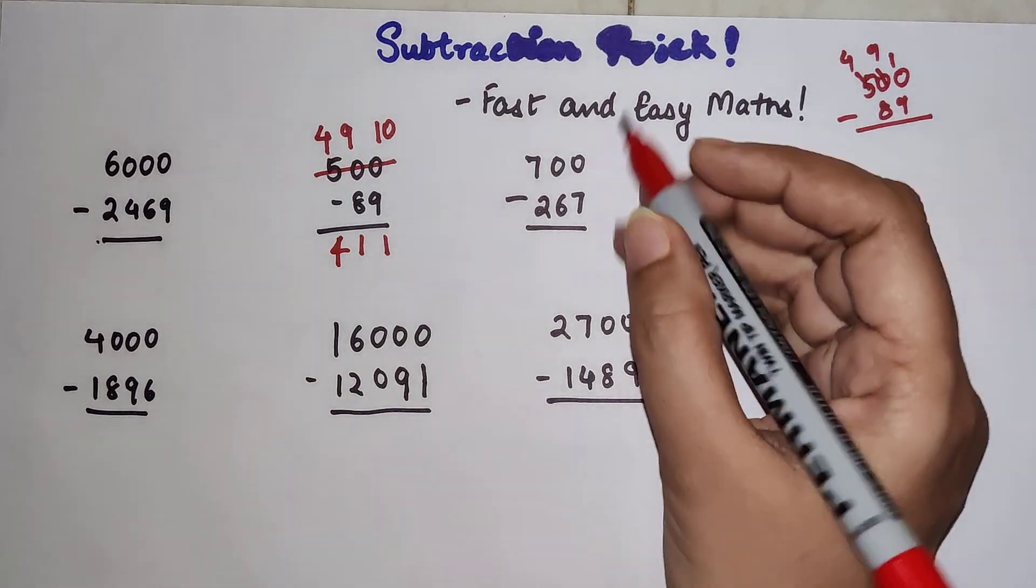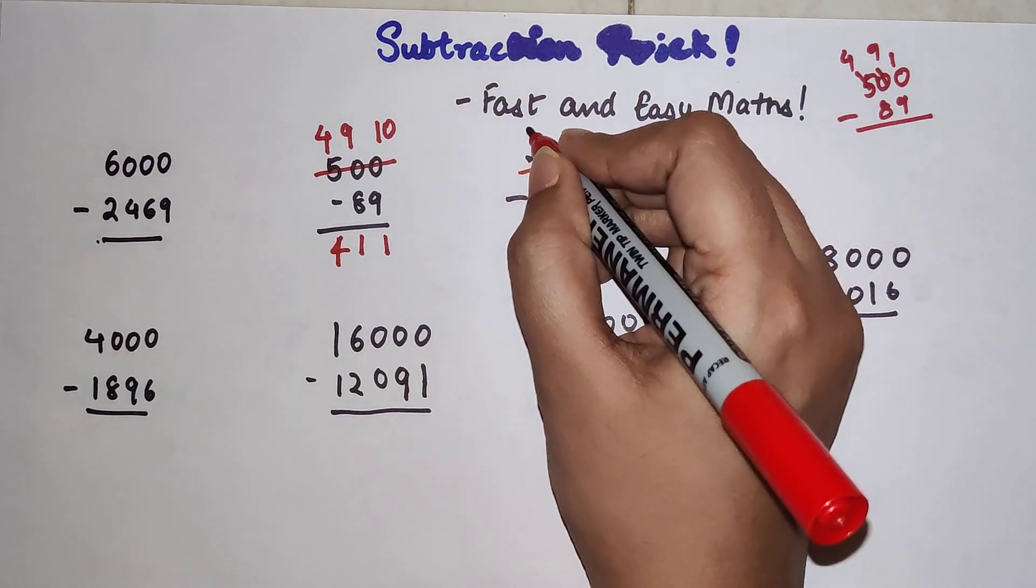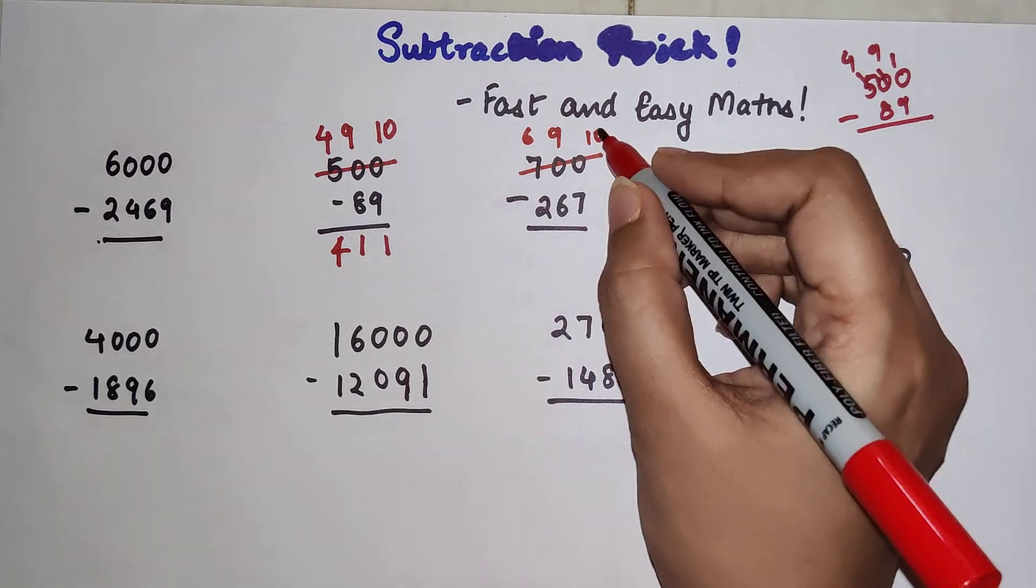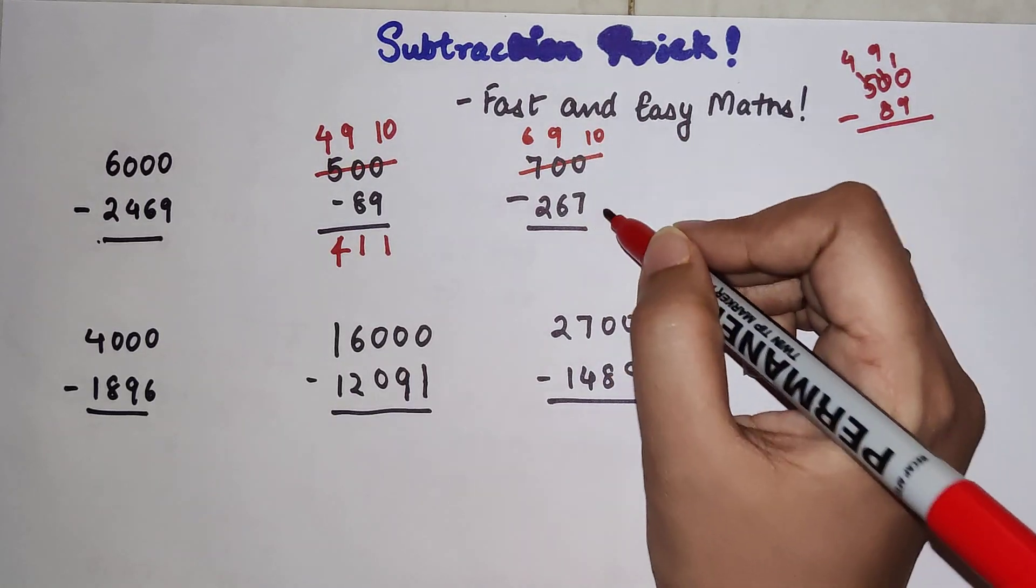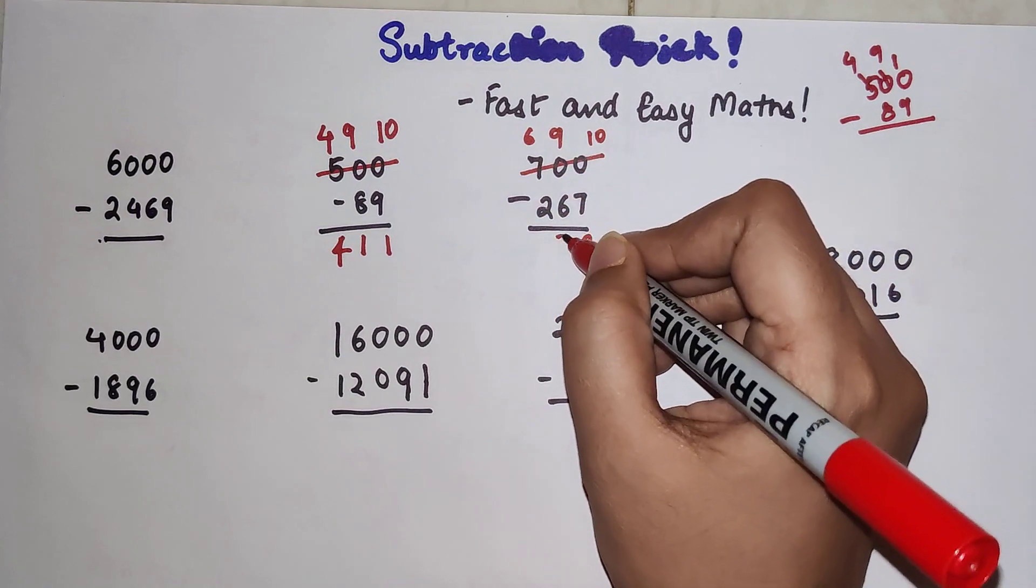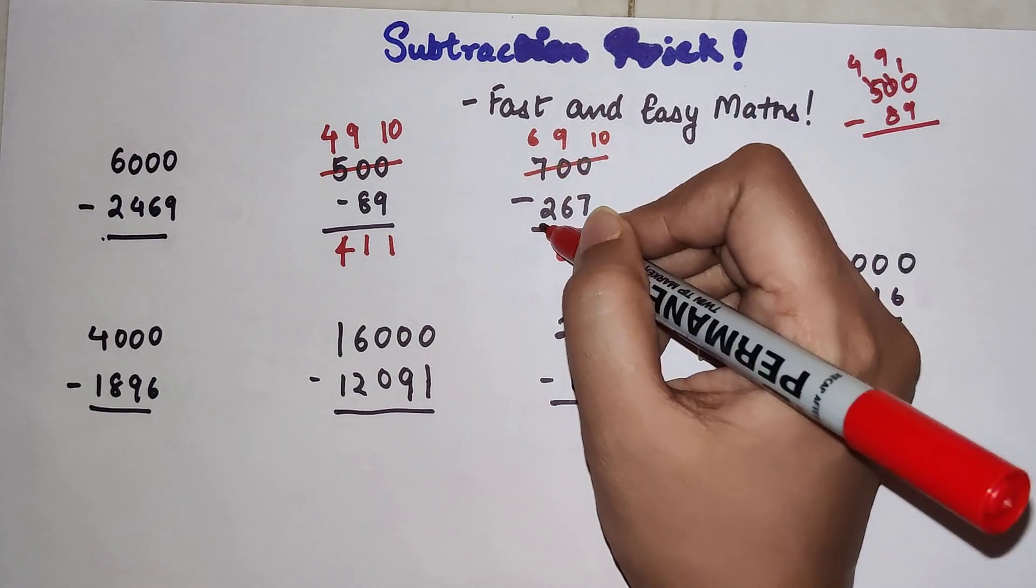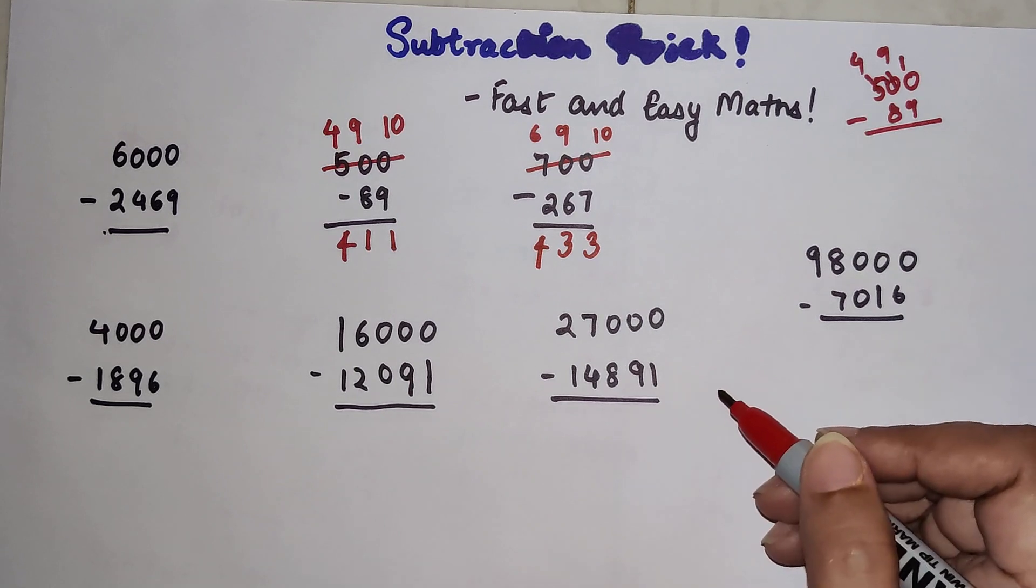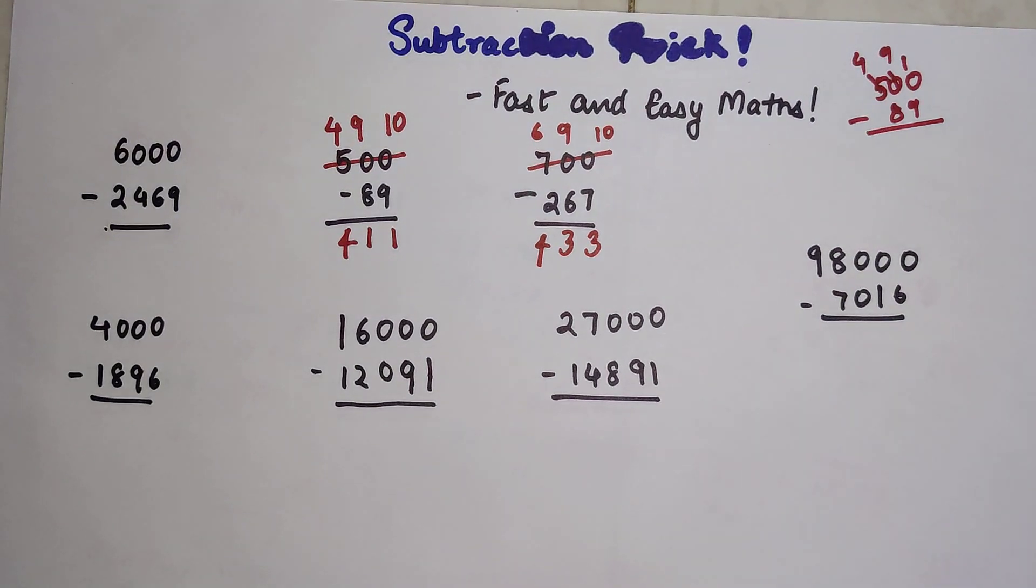Now let's do this one more time. We cancel this, becomes 6, this becomes 9, and this becomes 10. So 7 taken from 10 gets you 3, 6 taken from 9 gets you again 3, 2 taken from 6 gets you 4. So your final answer is 433.